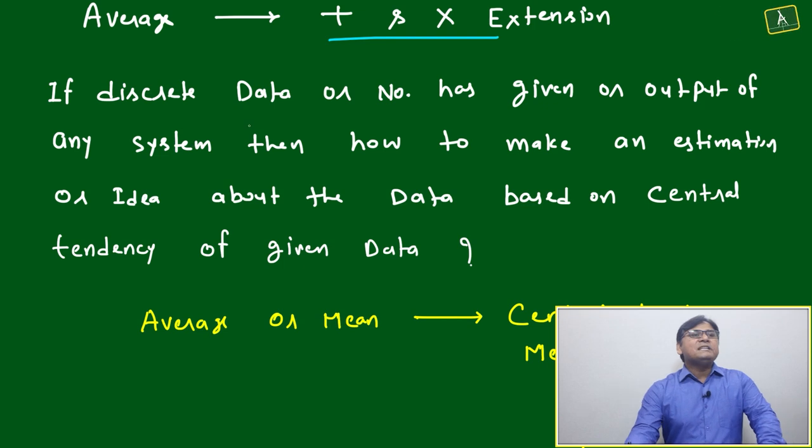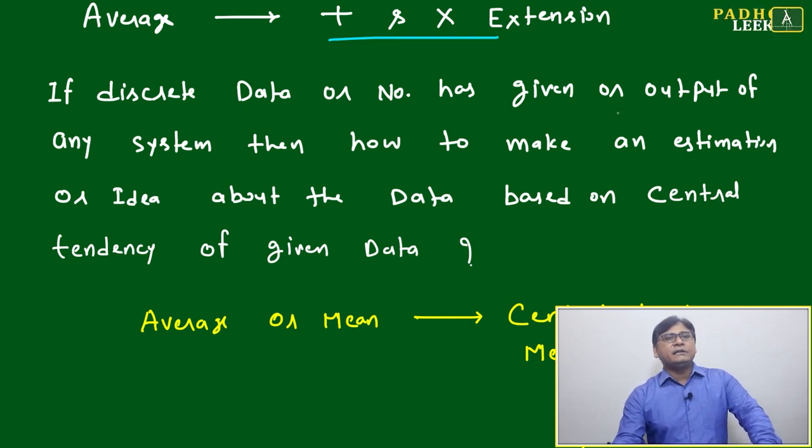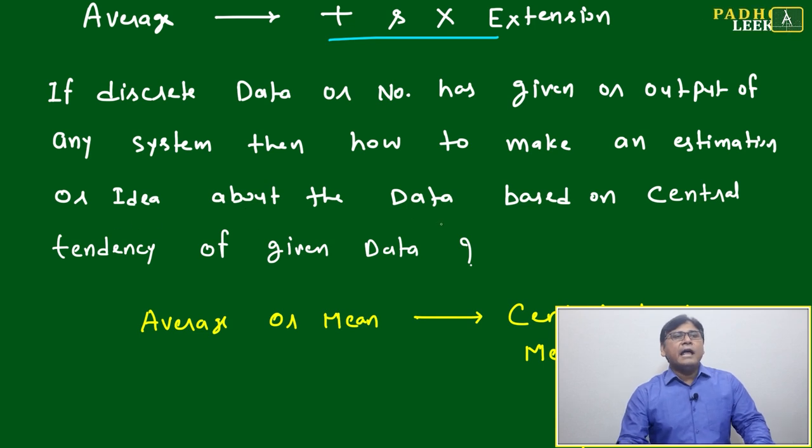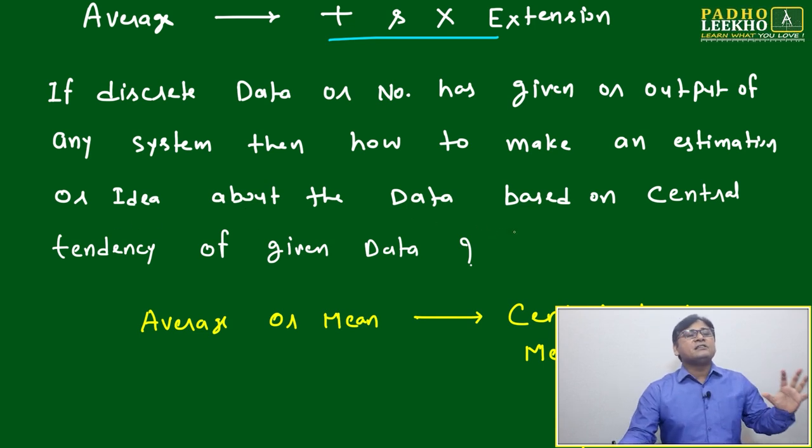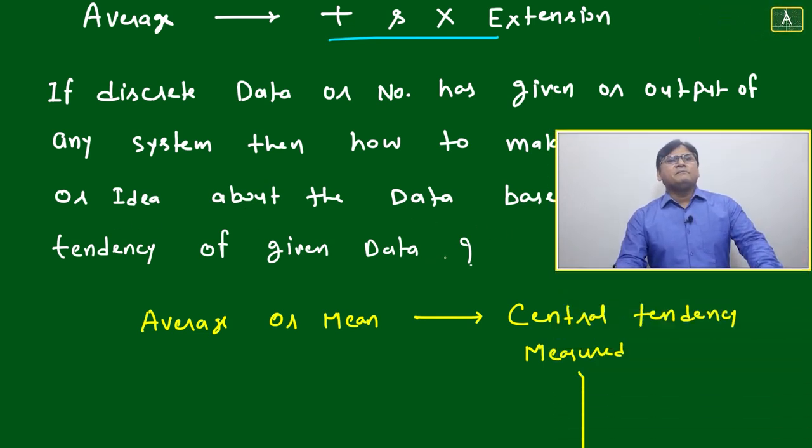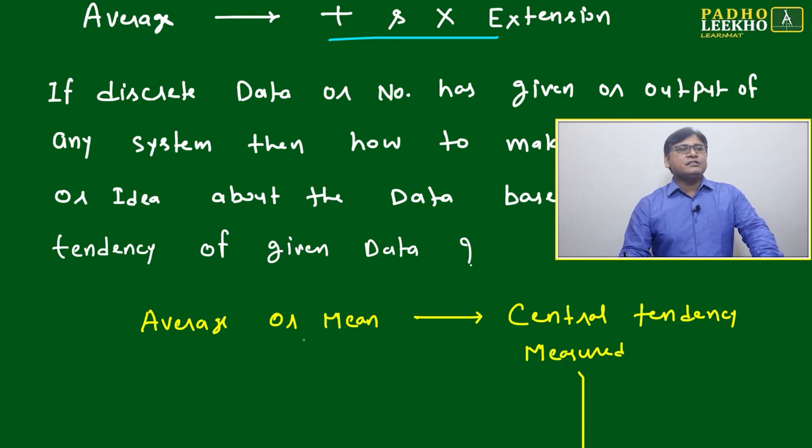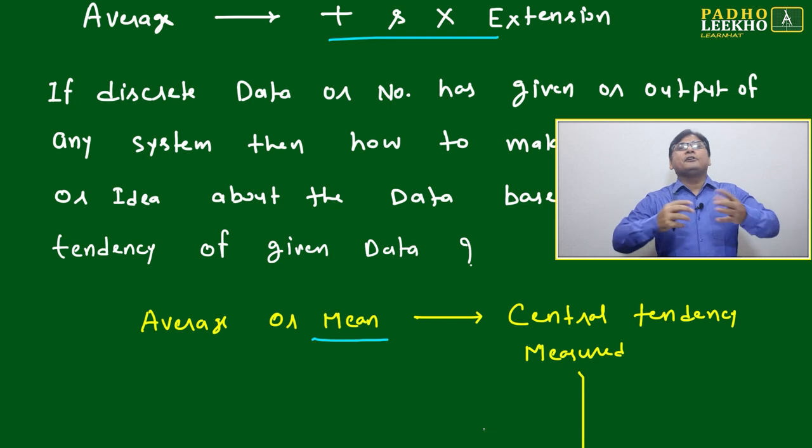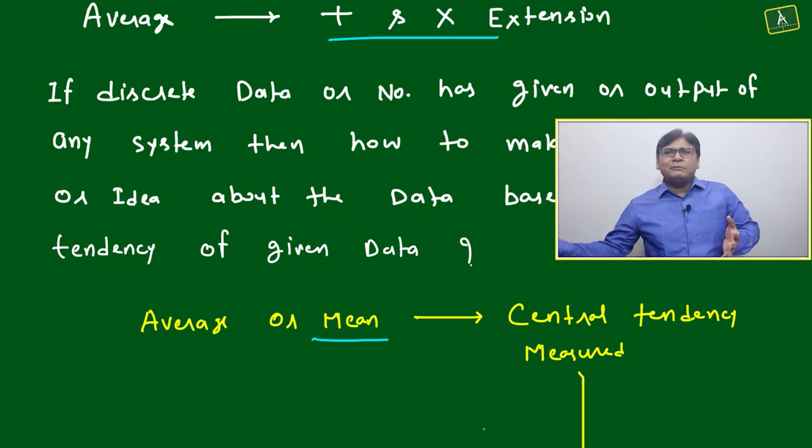If discrete data or number has been given as output of any system, then how to make an estimation or idea about the data based on the central tendency of given data? Generally we are measuring average or mean about the central tendency of the data - what is the central behavior of the data.